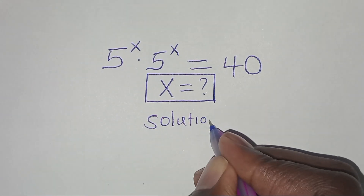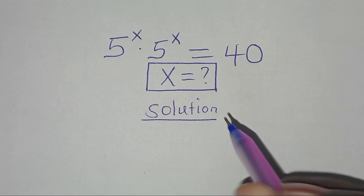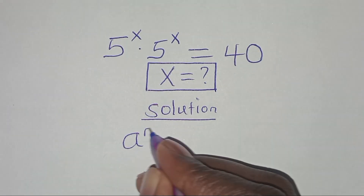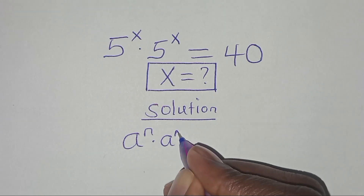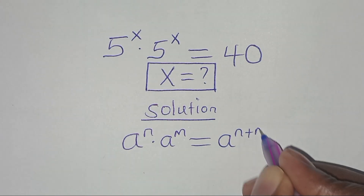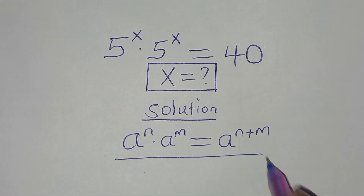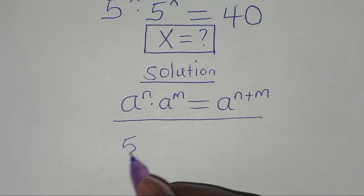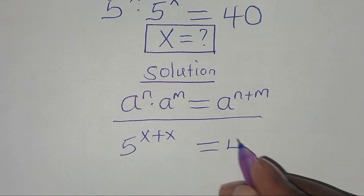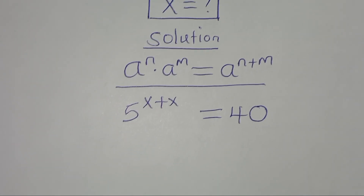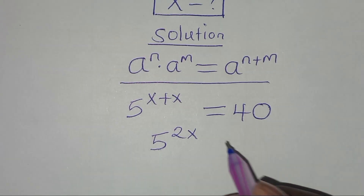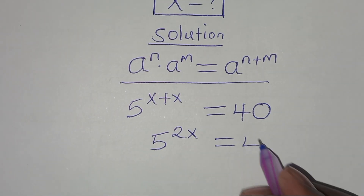Solution from here. We have that this exponential equation is in the form of a to the power n times a to the power m, which we can express as a to the power n plus m. Applying this property, we have that 5 to the power x plus x equals 40, which simplifies to 5 to the power 2x equals 40.